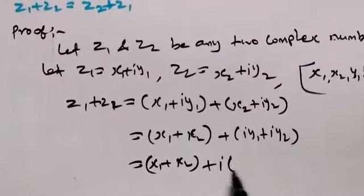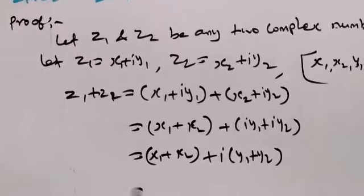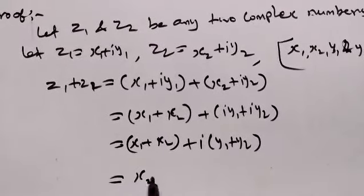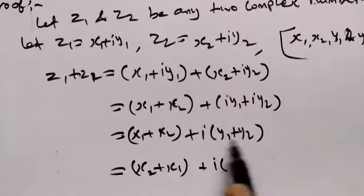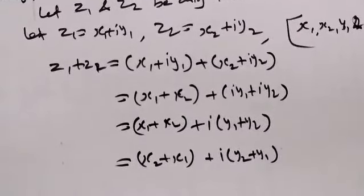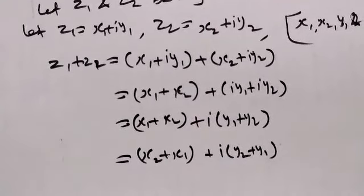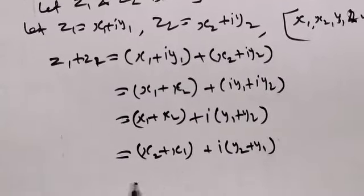Using the commutativity of real numbers: = (x2 + x1) + i(y2 + y1).